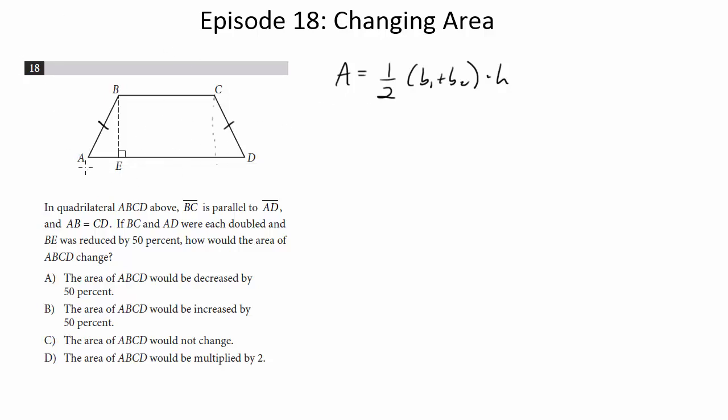So let's pick a side length of AD. Let's make this 20. Let's make this 10. Let's make this 6. So now let's figure out the original area. So the original area is going to be one-half, 20 plus 10 is 30, times 6. So that's going to be 90.